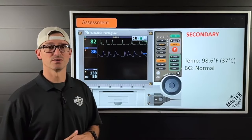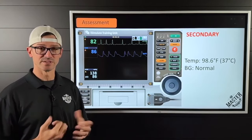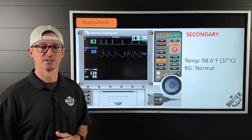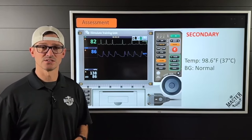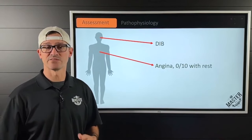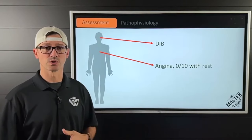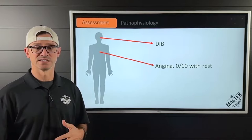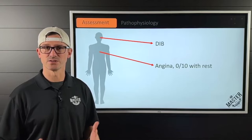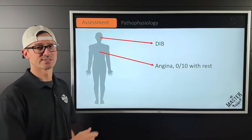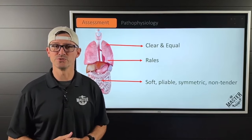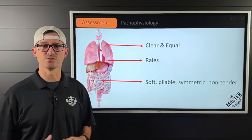His heart rate is 82 on the monitor, and you notice an irregular-irregular rhythm — afib at an average rate of about 82. He's 86% on room air, BP is 138 over 86, afebrile, and blood glucose is normal. He's having difficulty breathing with two to three-word dyspnea. While going up the stairs he had what was described as angina, but with rest he's now at zero out of ten, experiencing no chest pain. Upper lobes are clear and equal, but you notice diffuse rales in the lower lobes.